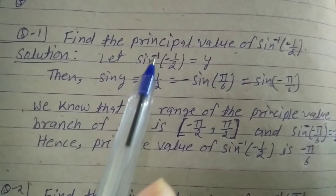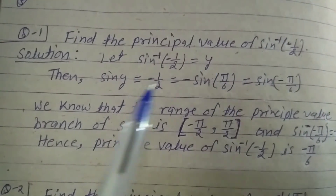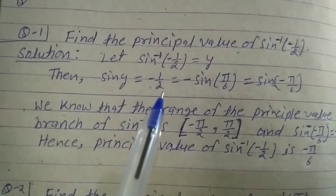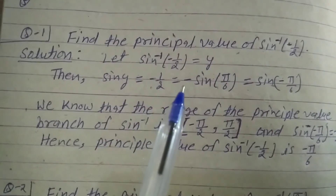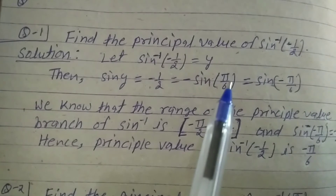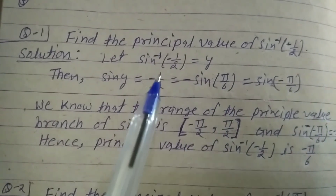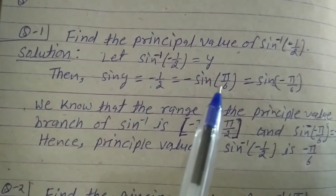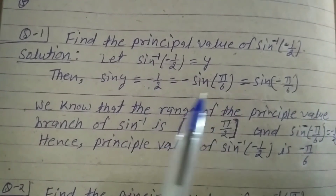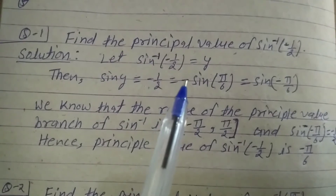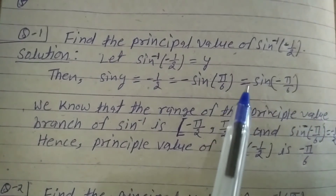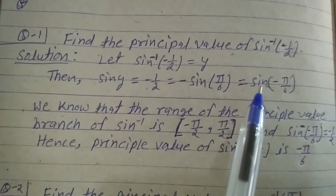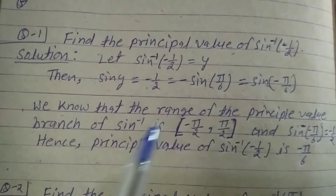Then taking sine on both sides, sine of y is equal to minus 1 by 2, which is equal to minus sine of pi by 6, because the value of sine pi by 6 is 1 by 2. So this is equal to sine of minus pi by 6.